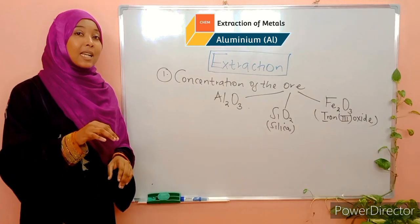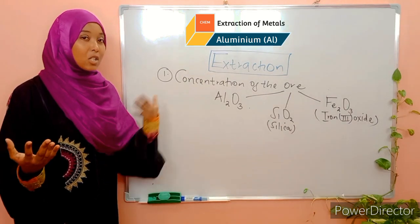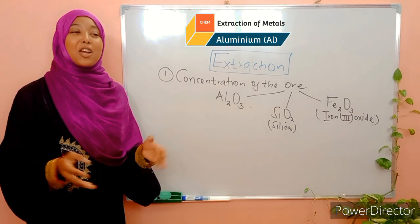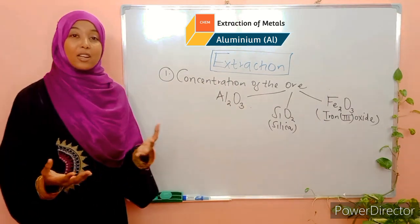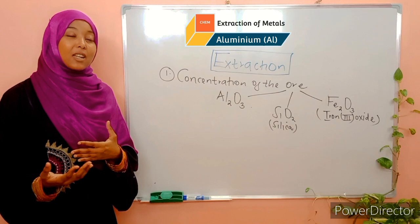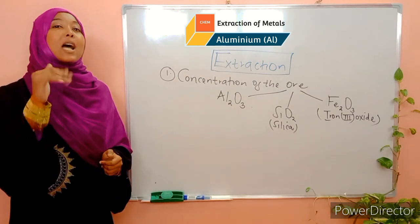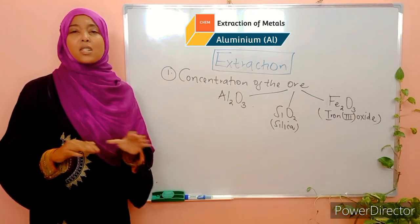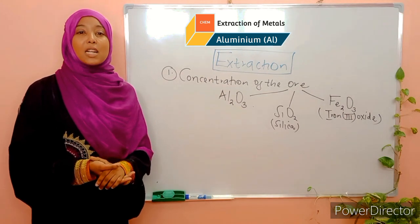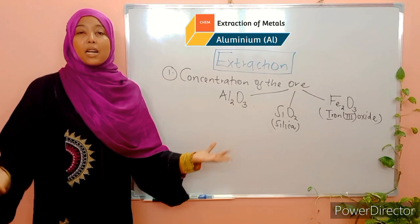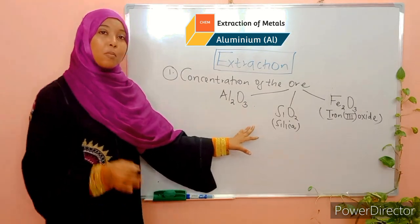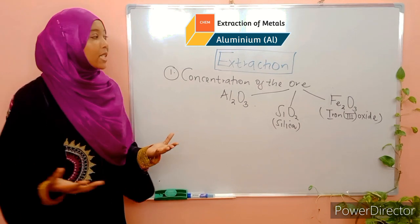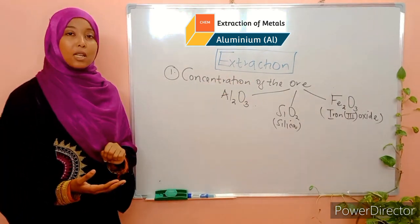Silica is an acidic oxide, and sodium hydroxide is a basic solution — a perfect match. So silica reacts with concentrated sodium hydroxide to form sodium silicate. Lastly, iron-3-oxide does not dissolve in or react with sodium hydroxide, so it simply remains unreacted. These two form soluble solutions, but iron-3-oxide does not, so it is separated from them by filtration.